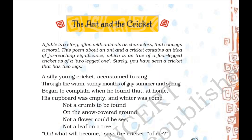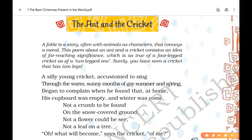The poem is adapted from Aesop's Fable. A fable is a story, often with animals as characters, that conveys a moral. Some examples of fables are: The Fox and the Grapes, The Lion and the Mouse, The Hare and the Tortoise, and The Wind and the Sun.